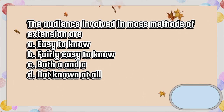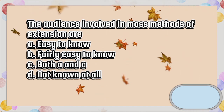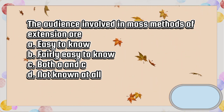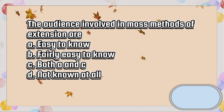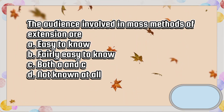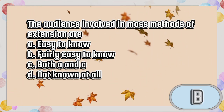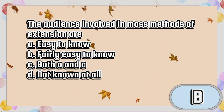The audience involved in mass methods of extension are: A. Easy to know, B. Fairly easy to know, C. Both A and C, D. Not known at all. The answer is letter B.